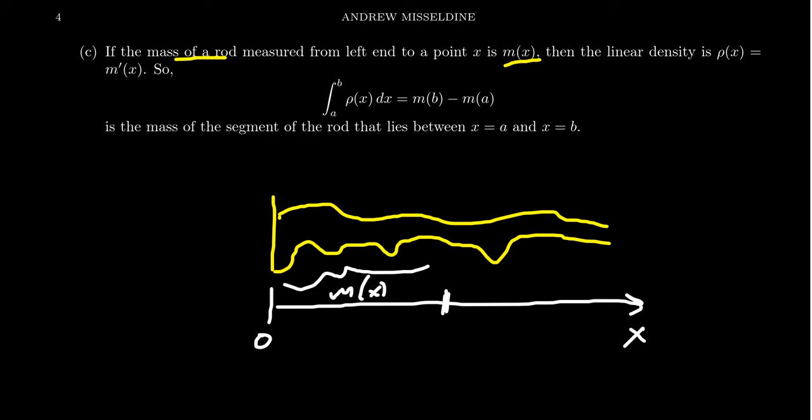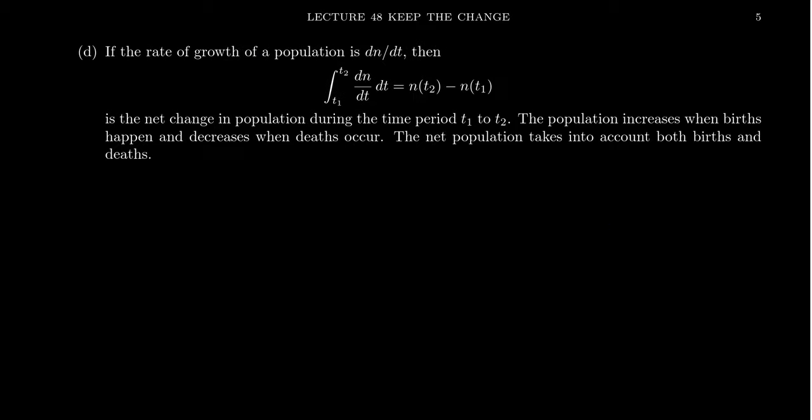Well, then the linear density, remember, rho of X, this linear density was just the derivative of mass with respect to position. If you integrate your density function, if you integrate density, then you'll capture M of B minus M of A. This difference of mass is the mass of the segment that lives between A and B. You can accomplish that by integrating from A to B your density function, rho DX. So integrating linear density gets you back the mass function, but it gives you the net change of mass.